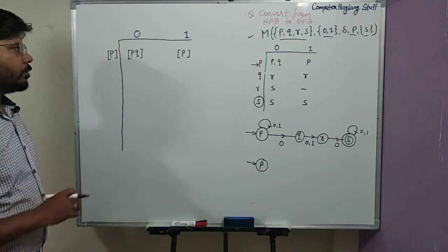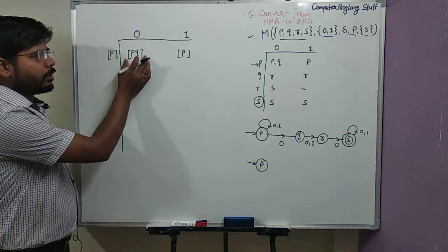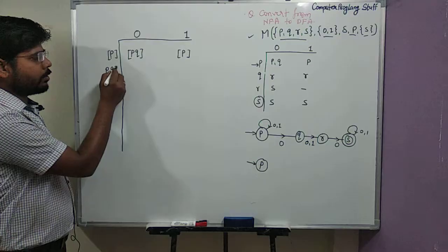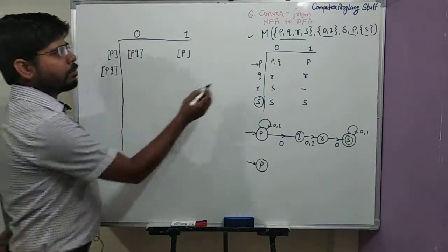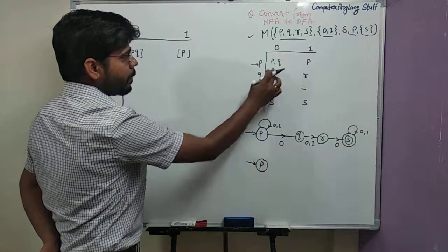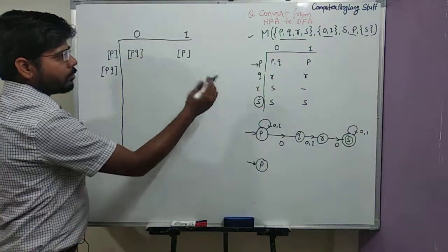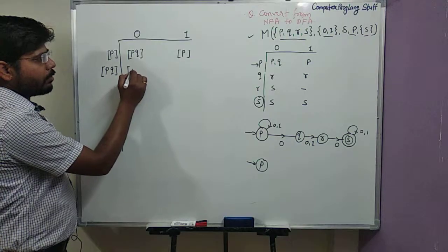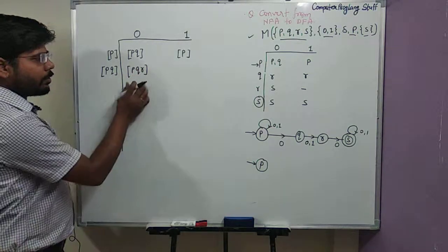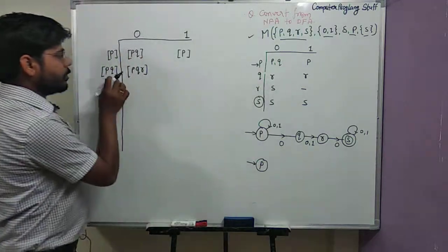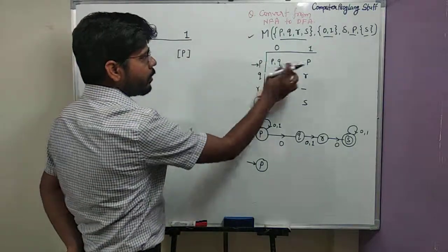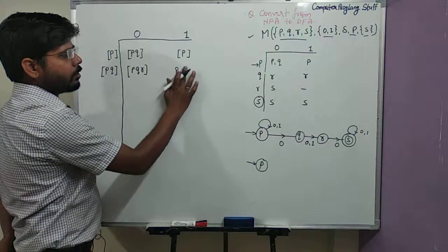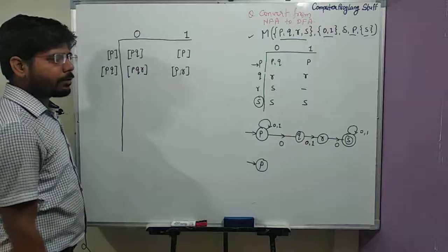Now we make transitions from our new state P,Q. From P on input 0 we get P,Q, and from Q on input 0 we get R, so collectively for state P,Q on input 0 we have P, Q, and R. For transition 1 from state P,Q: from P we get P and from Q we get R, so that gives us P and R.